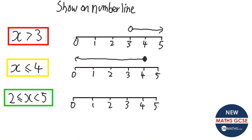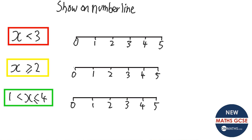For the last one on the number line, I put dots at 2 and 5, and x can be anywhere between those two. I join up the dots. It can be 2, so that dot is filled in. But it can't be 5 — it has to be less than 5 — so that dot stays hollow. For the practice: x is less than 3 gives a hollow dot at 3 going left. x is greater than or equal to 2 gives a filled dot at 2 going right. For 1 < x ≤ 4, dot at 1 is hollow and dot at 4 is filled.